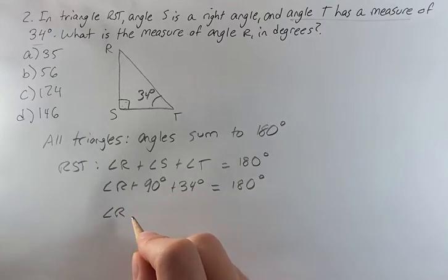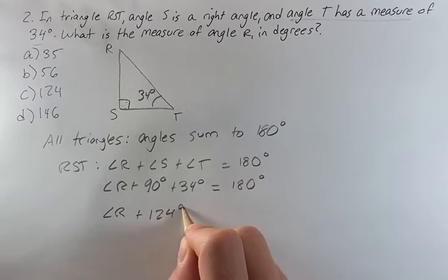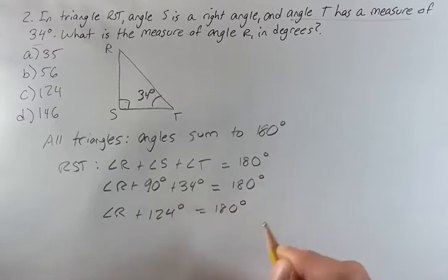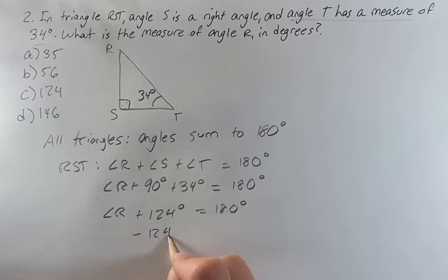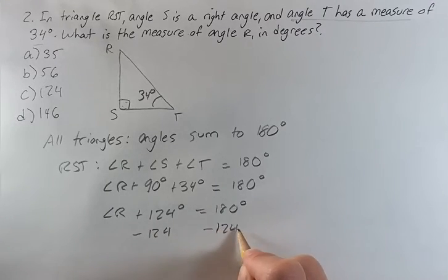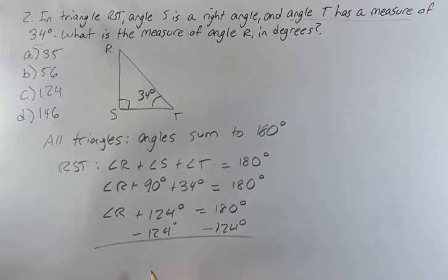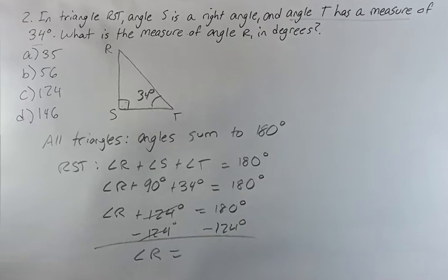So it's 90 degrees plus 34 degrees, that's 124 degrees, is equal to 180 degrees. If we subtract 124 from both sides we're going to be given the value of R.